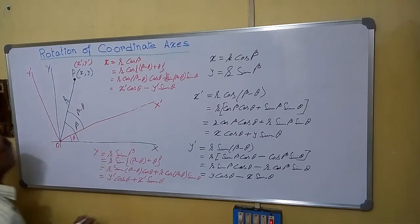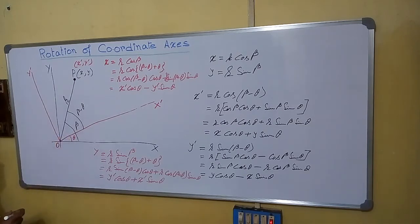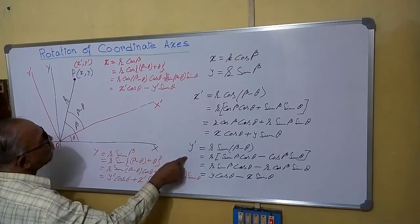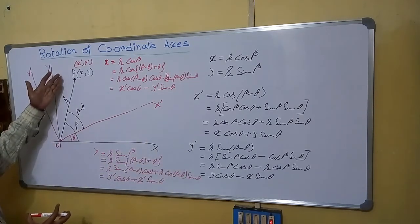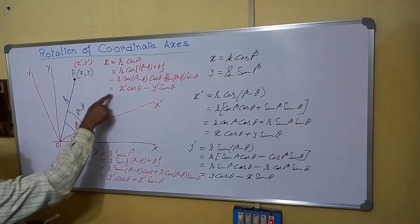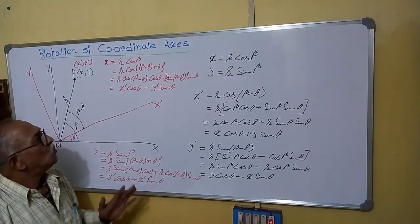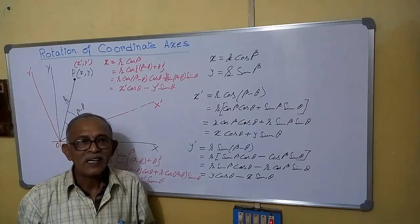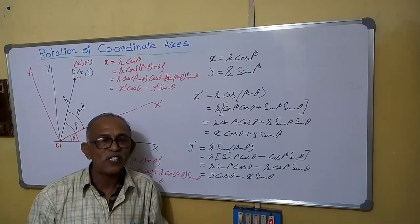So in this way, if we are rotating an axis through an angle theta, then x, y becomes x-dash, y-dash and the relation is shown. And if we are knowing x-dash and y-dash and have to find the original x, y, then x and y are given by the inverse relations. In this way we can find the changes in coordinates.